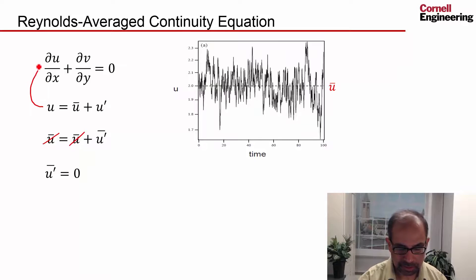If I substitute this in here and also the corresponding Reynolds decomposition for the v-velocity, and then I average the equations, what happens is all the fluctuating quantities will drop out.